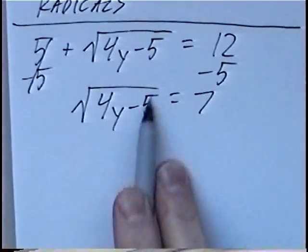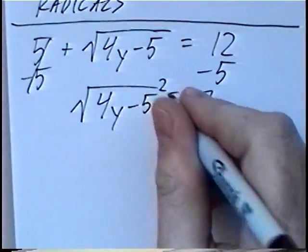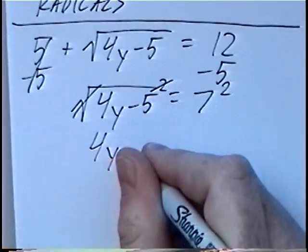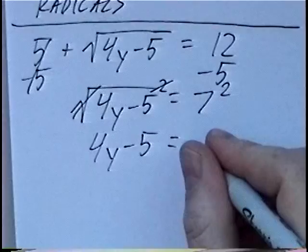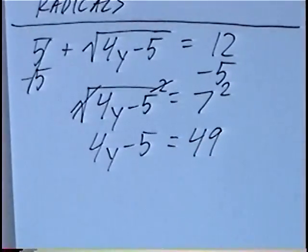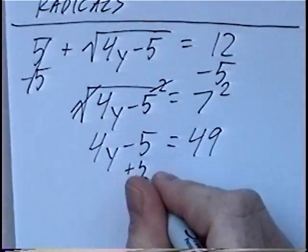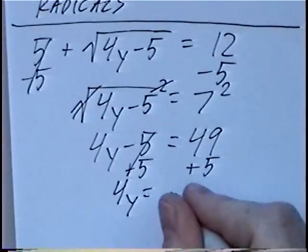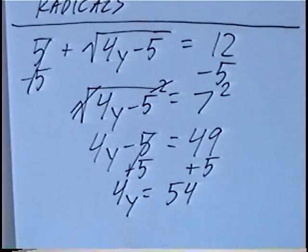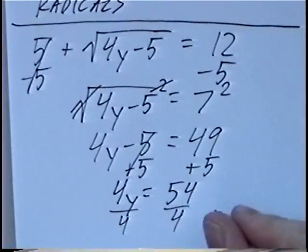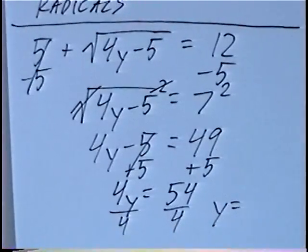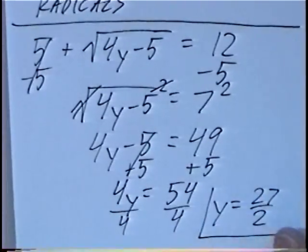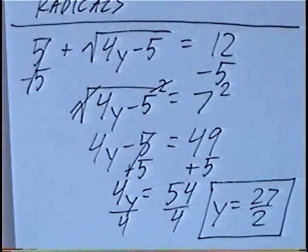Solving from here, when you have the square root by itself, the opposite of a square root is to square both sides. The radical and exponent will cancel, so we'll be left with 4y minus 5 equals 49. Adding 5 on both sides, 4y equals 54. Dividing both sides by 4, we have y equals 54 over 4. Reducing by dividing by 2, we'll have 27 over 2. So the final answer is y equals 27 over 2.